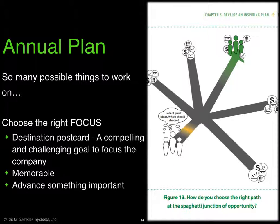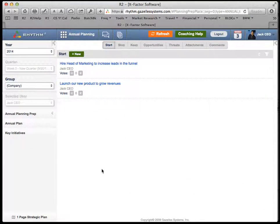There are so many possible things to work on, and what you want to do is choose the right focus. When you have that, you want to have a destination postcard — a compelling and challenging goal that focuses the company. You want this to be memorable. Every year should advance something important. You can use Rhythm to prepare for your annual planning meeting, discuss and choose the right initiatives, and then collaborate.